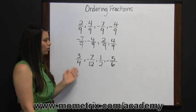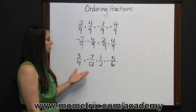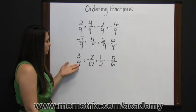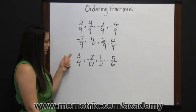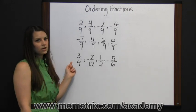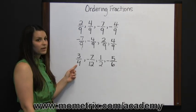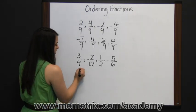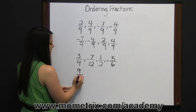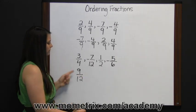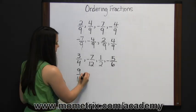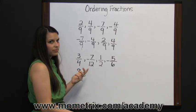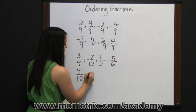First, we're going to convert all these fractions to have the denominator of twelve. Three fourths: to convert three fourths to something over twelve, we need to multiply four times three. So we'll do the same to our numerator. Three times three is nine, and four times three is twelve. So three fourths is nine twelfths. Negative seven twelfths already has our least common denominator of twelve, so we're going to leave it alone.